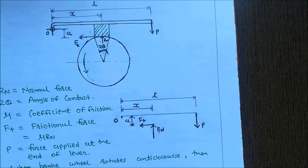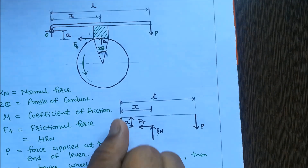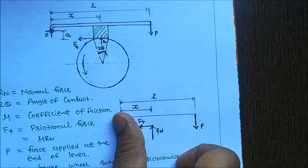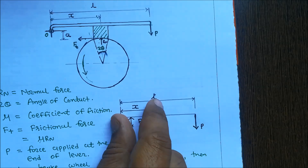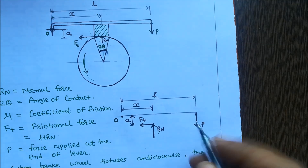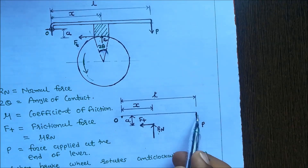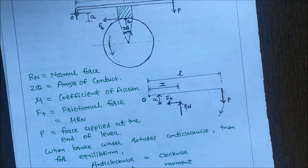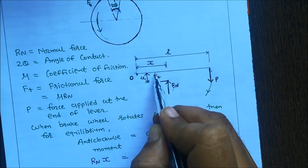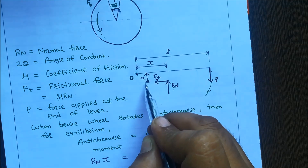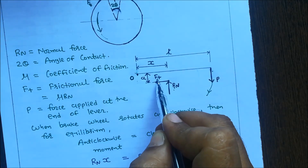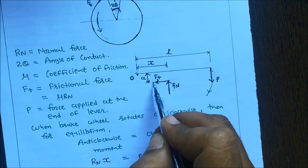For the equilibrium condition, anti-clockwise moment equals clockwise moment. Taking moments from the fulcrum — pressing the thumb at the fulcrum and rotating the finger in the direction of the force — force P goes in the clockwise direction. So we write P × L in the clockwise moment. The second force is the tangential force Ft: rotating toward the fulcrum, this moment also goes in the clockwise direction, so we write Ft × A in the clockwise moment.